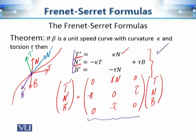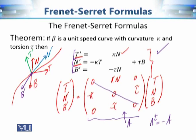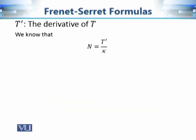The matrix expressing T', N', B' in terms of T, N, B is anti-symmetric. If we call this matrix A, then its transpose equals -A. This feature — that the coefficient matrix is anti-symmetric — is going to remain the same when we generalize these ideas to other geometric shapes in R3, such as surfaces.